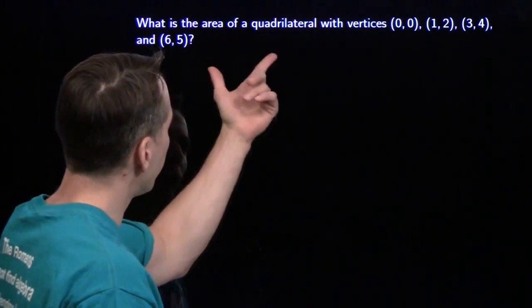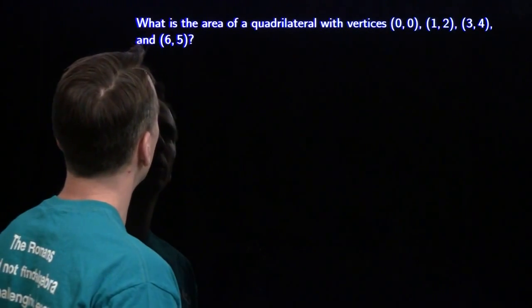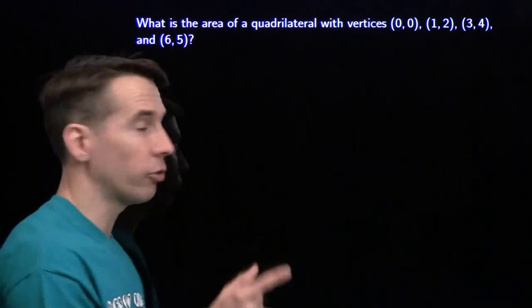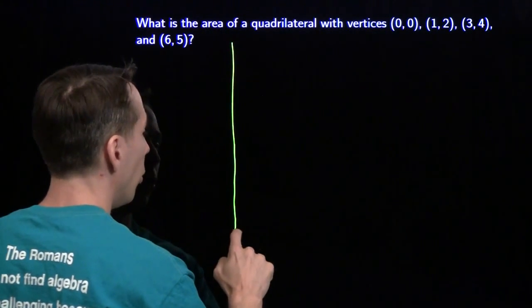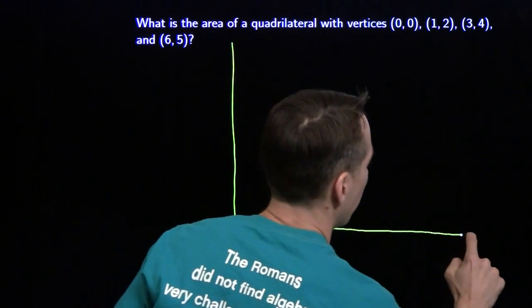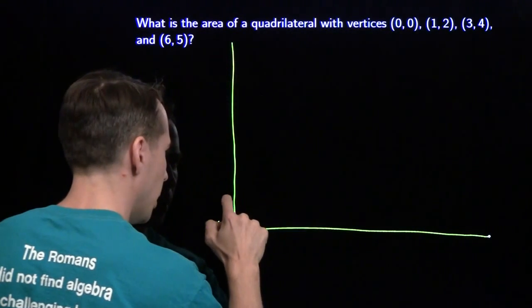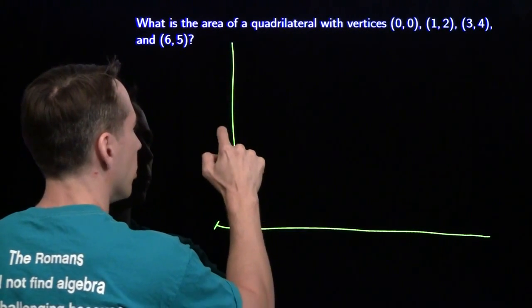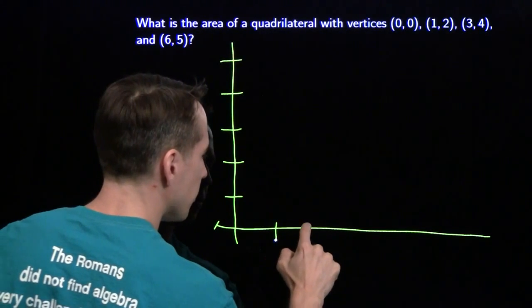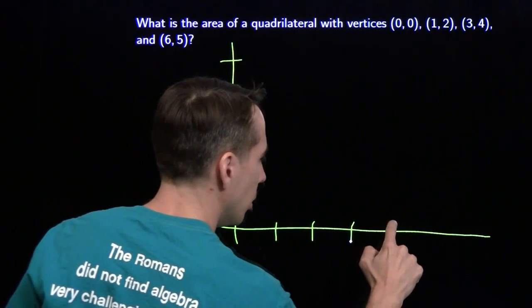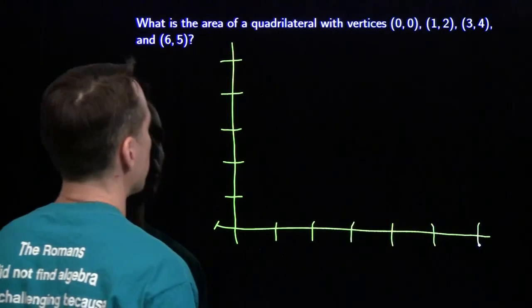We're going to start here. We've got a quadrilateral, vertices - this doesn't help. We need a picture. Very important geometry problem-solving strategy, draw the picture. Seems obvious, but still very important.